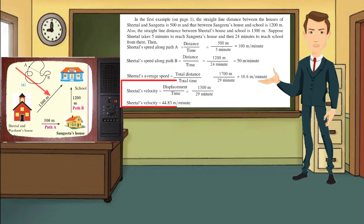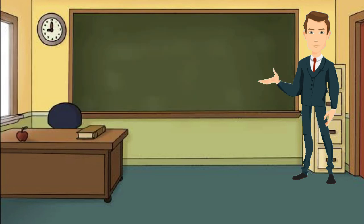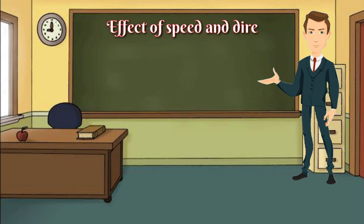Now, Sheetal's velocity: velocity equals displacement divided by time. Displacement is 1300 meters and total time required is 29 minutes. Therefore, Sheetal's velocity is equal to 44.83 meters per minute. This also demonstrates the effect of speed and direction on velocity.